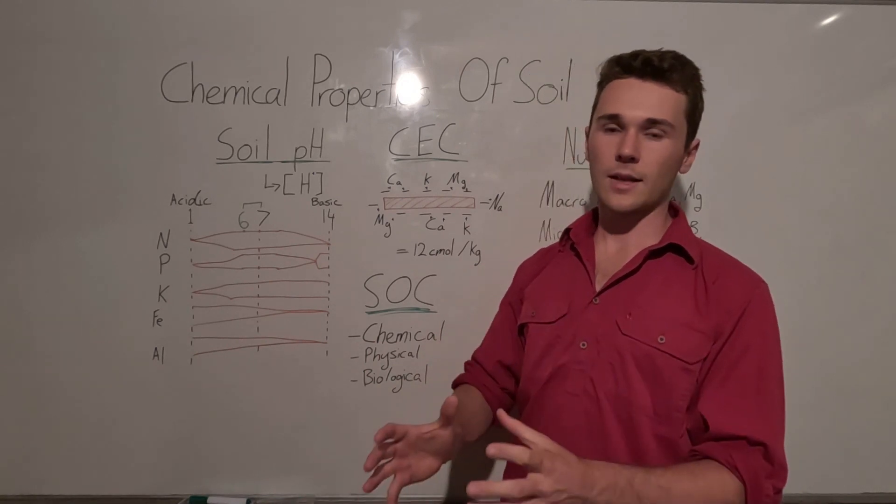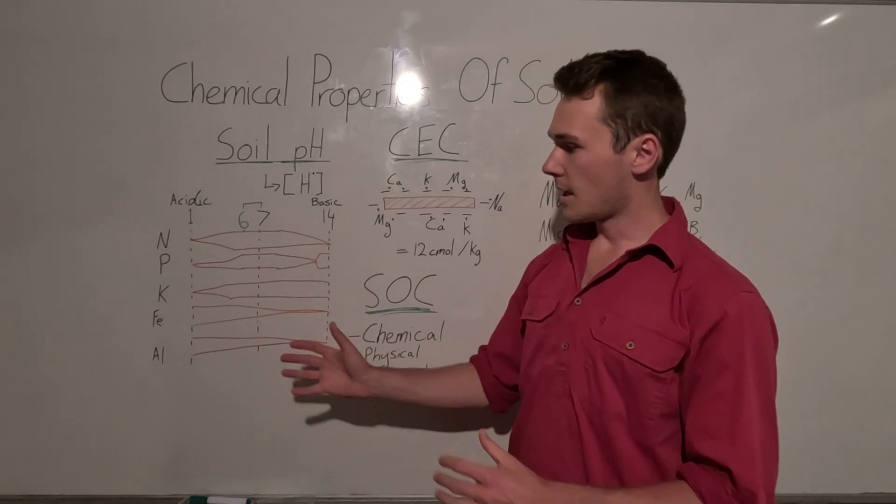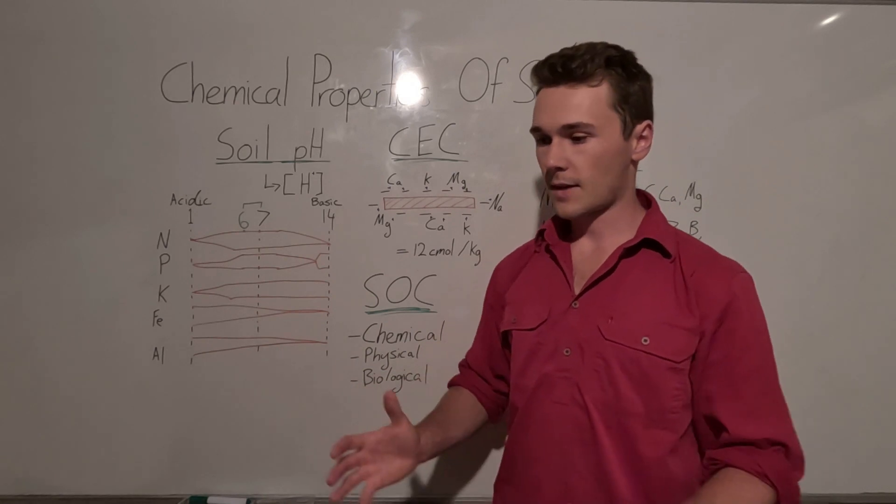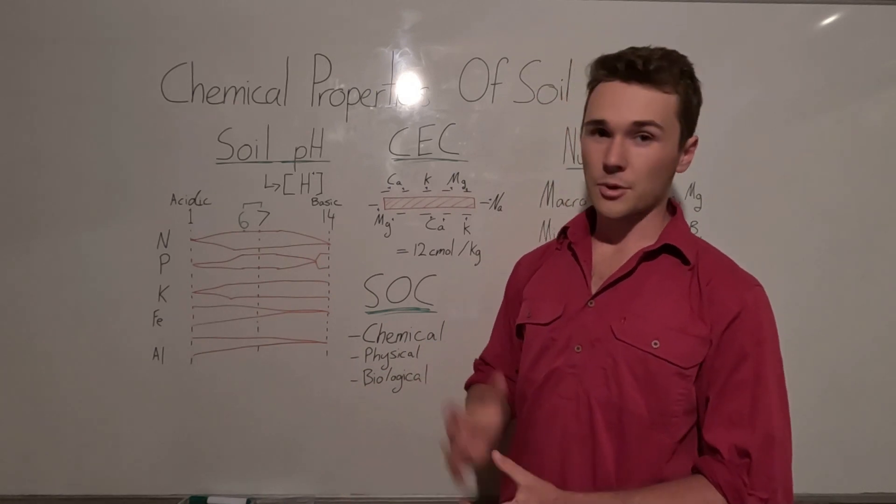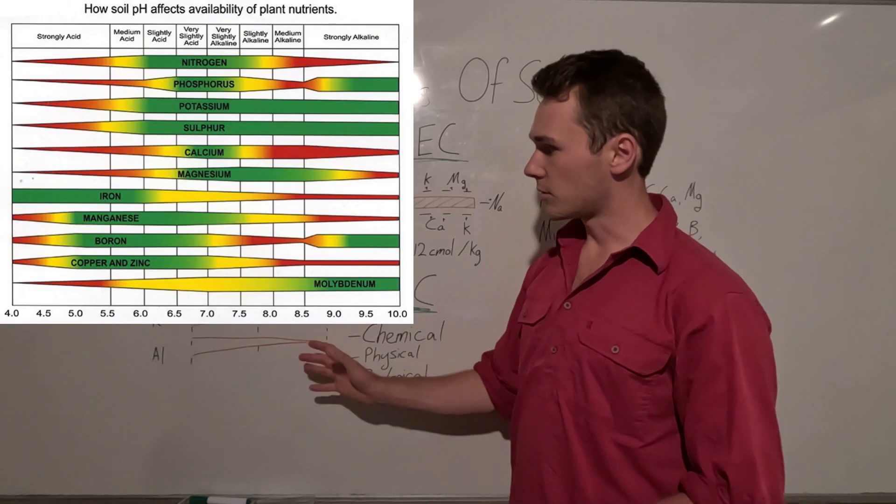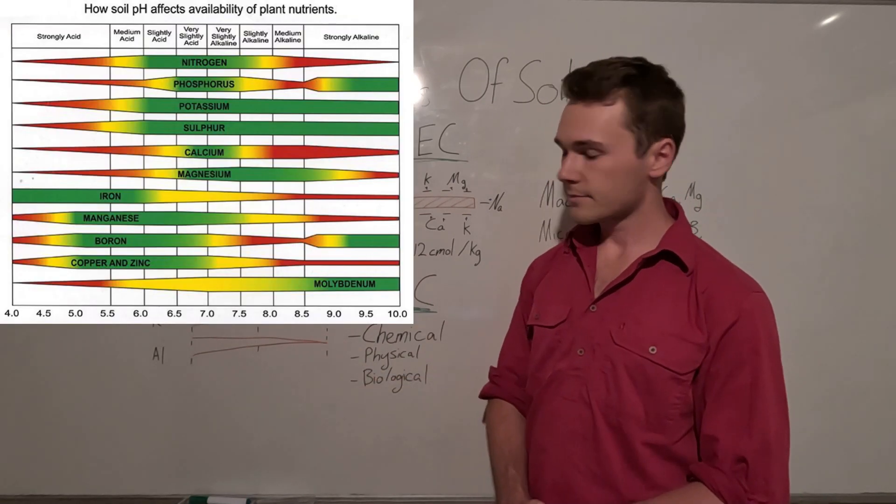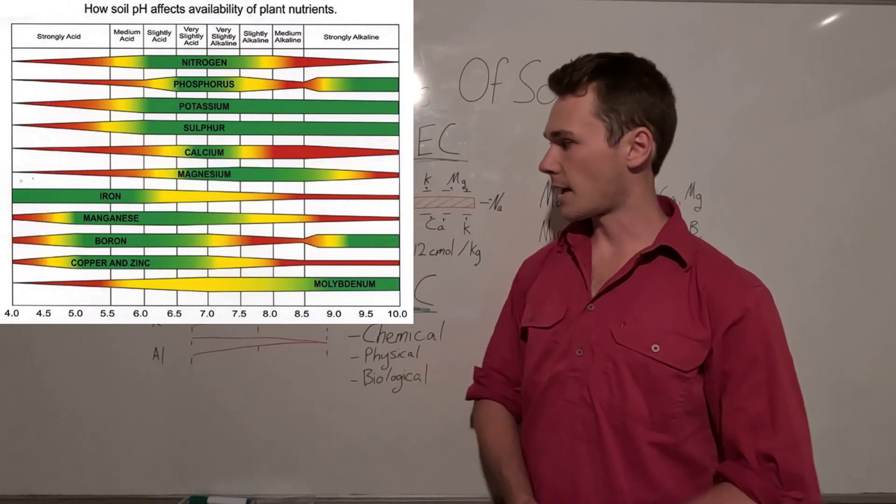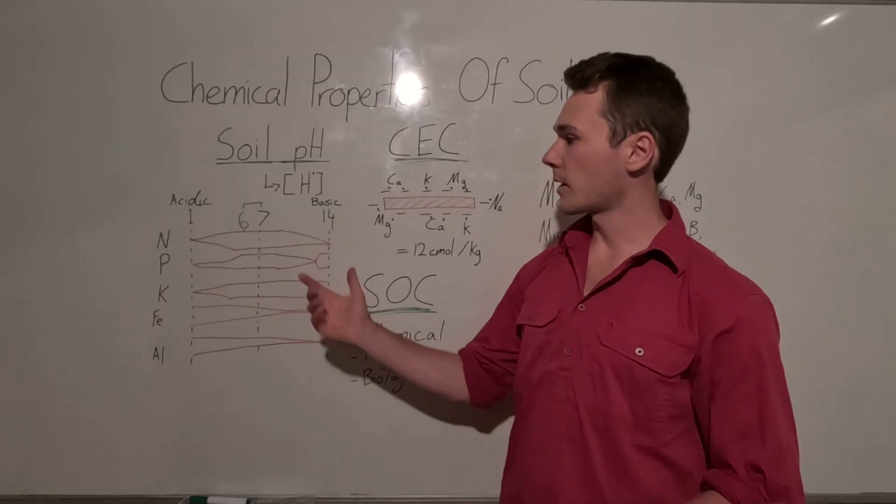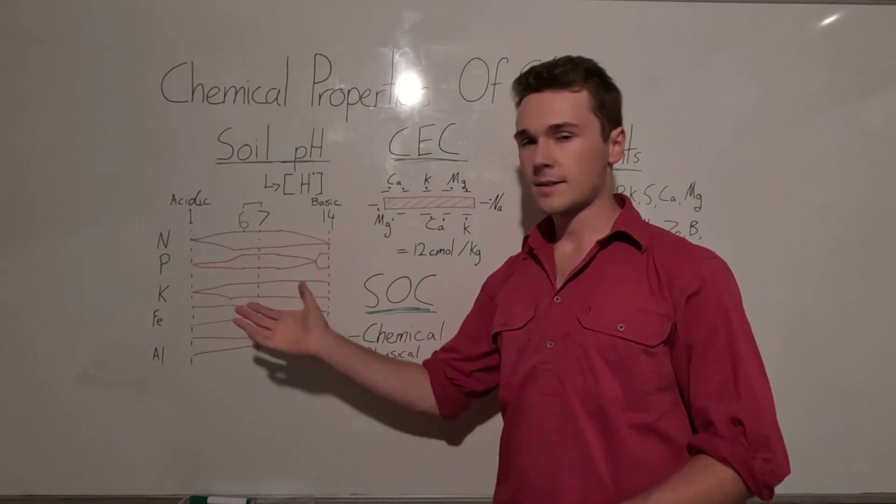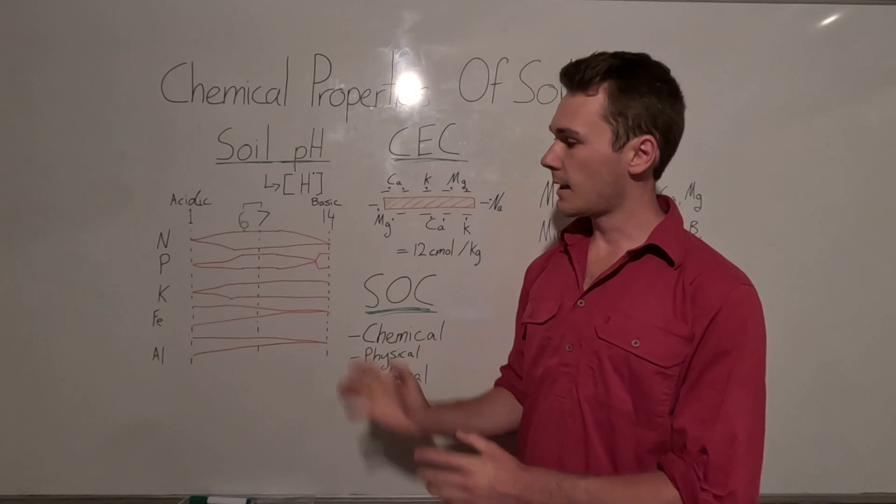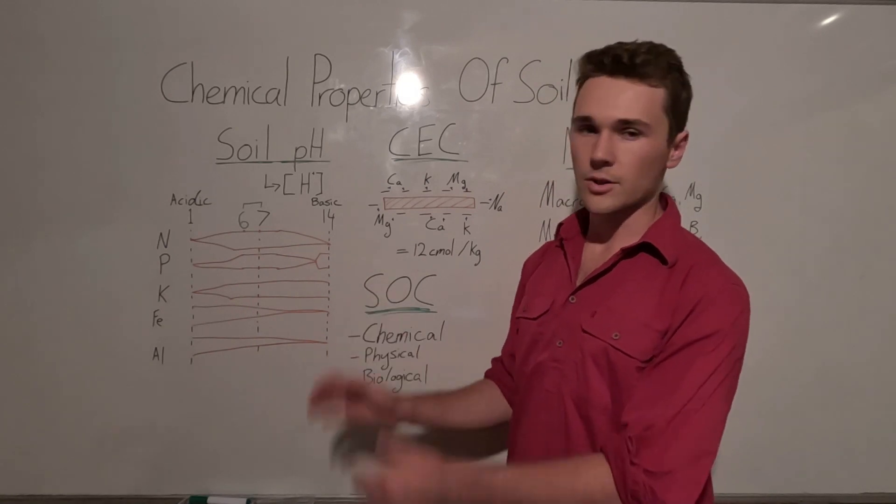Now the actual chemistry as to why different elements become more and less available at different pH is pretty complex and I don't fully understand it, but as a general rule, here are the availabilities with pH. Again, we want to keep our soils between 6 and 7, that's ideal, and that is also where microbes can function the best.